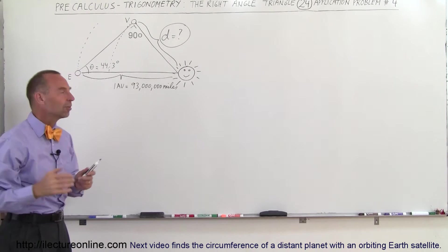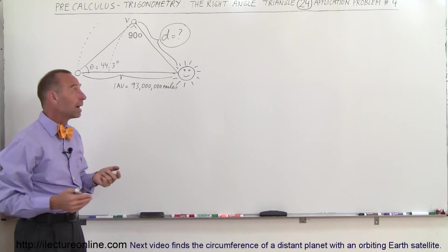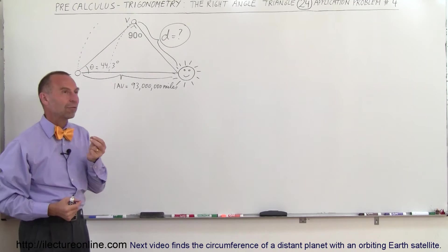We know that the hypotenuse is one astronomical unit which is 93 million miles. So we want to know the opposite side, we know the hypotenuse. That means we have to use the sine. The sine is a relationship between the opposite side and the hypotenuse.